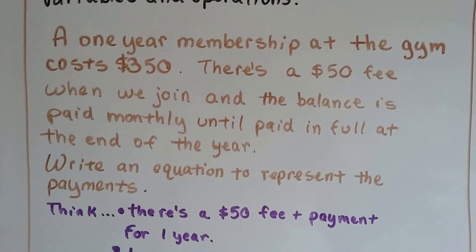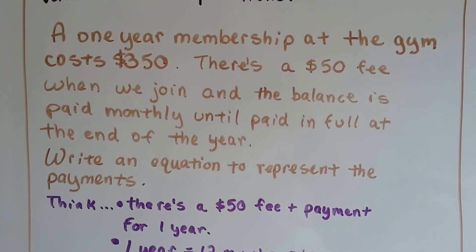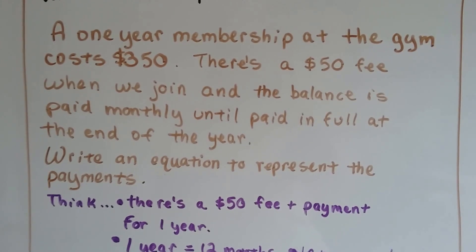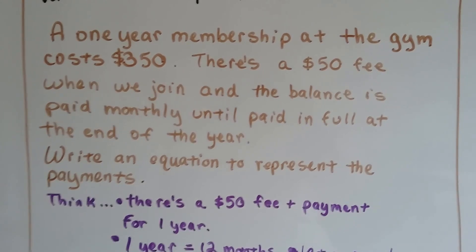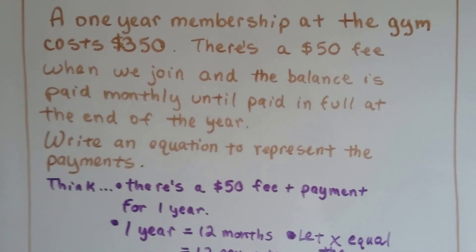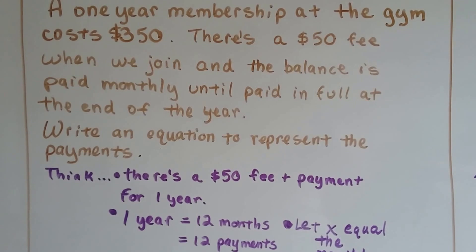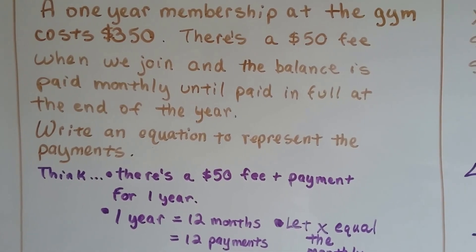A 1-year membership at the gym costs $350. There's a $50 fee when we join, and the balance is paid monthly until paid in full at the end of the year. So write an equation to represent the payments. So we think, there's a $50 fee and then payments for a year.